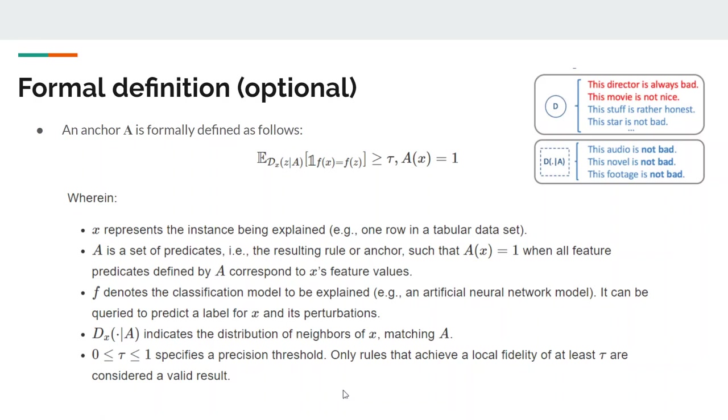Now, let's see the formal definition. An anchor A is formally defined with this expression, wherein x represents the instance being explained, for example a row in a tabular dataset. A is a set of predicates. F denotes the classification model to be explained. And D_x(A) indicates the distribution of neighbors of x that match the predicates on A.